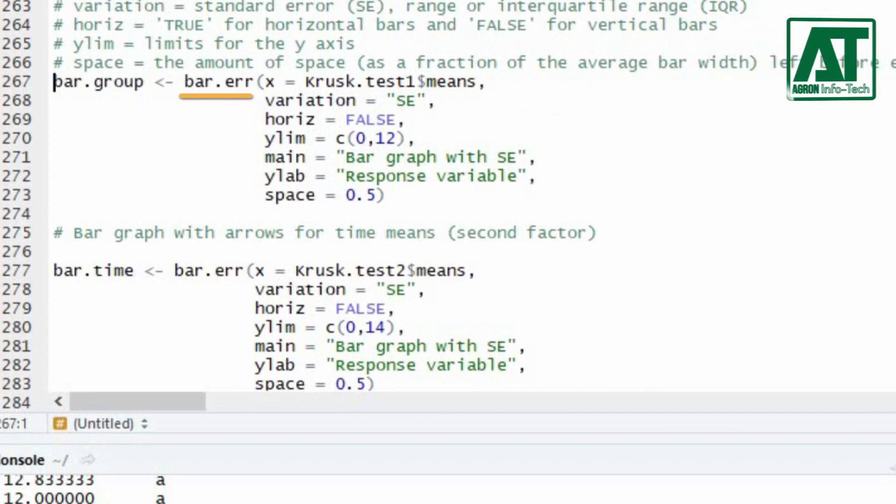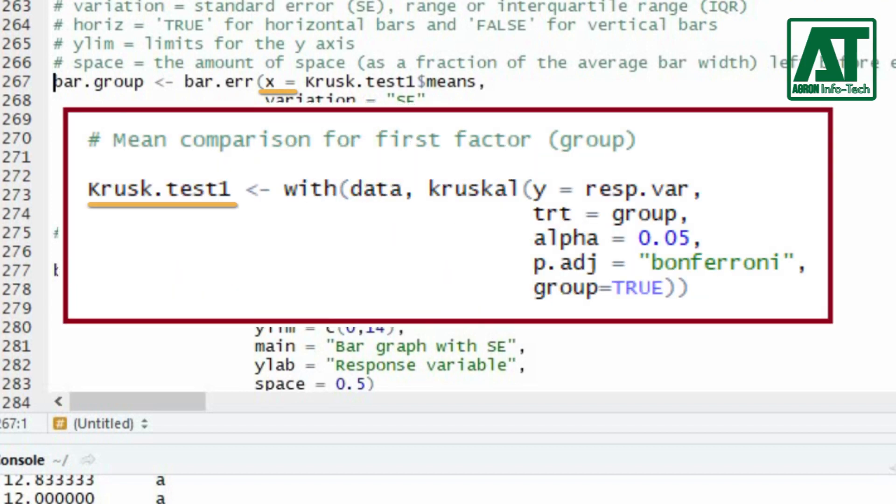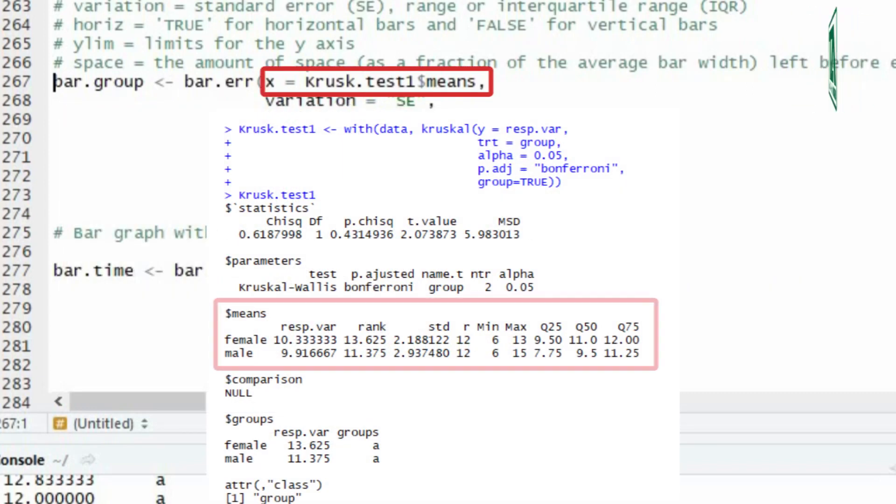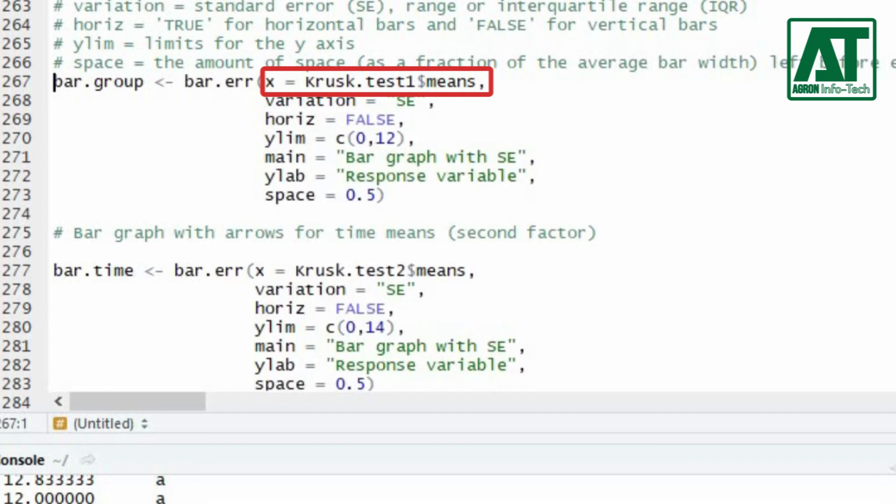It plots bars of the averages of treatments and standard error or standard deviance. It uses the objects generated by a procedure of comparison like LSD, HSD, Kruskal and Waller-Duncan. This function requires x as an object that specifies means of the comparisons made earlier for group factor in Kruskal-Wallis test. To extract means of the comparisons component from object of Kruskal-Wallis test use dollar sign before the name of the component.